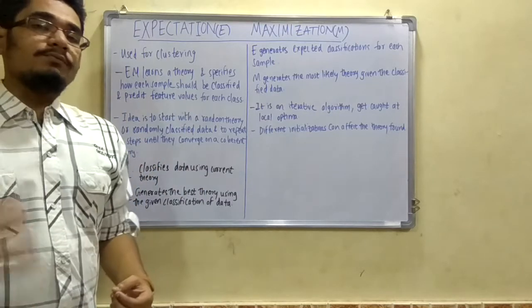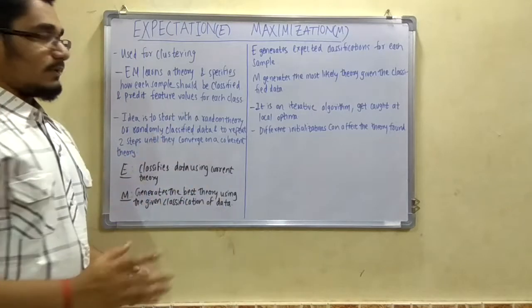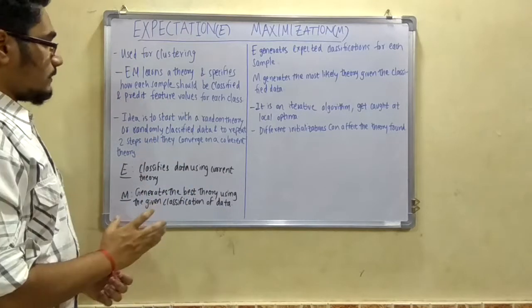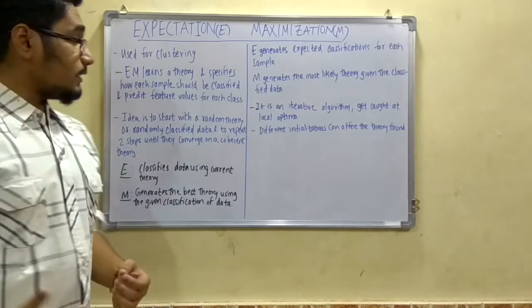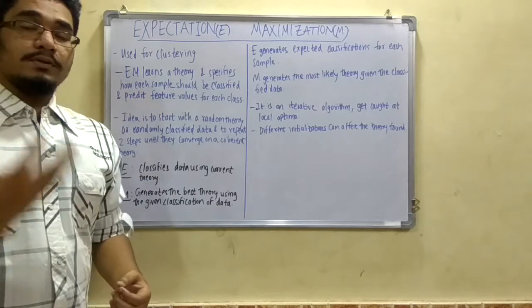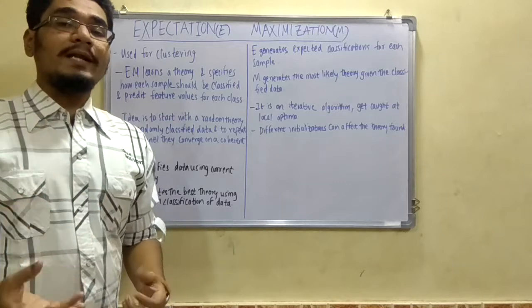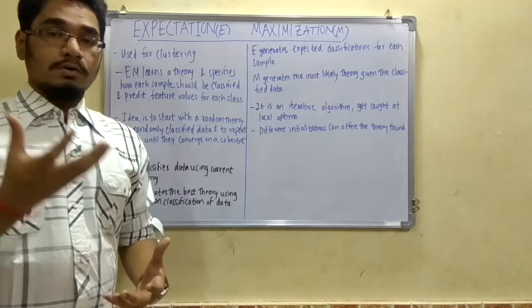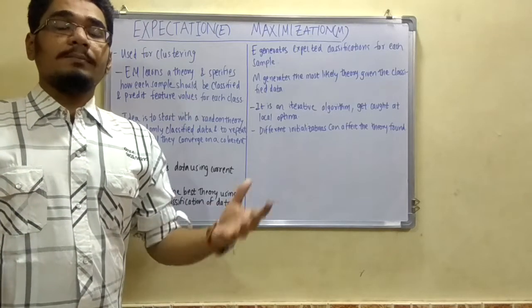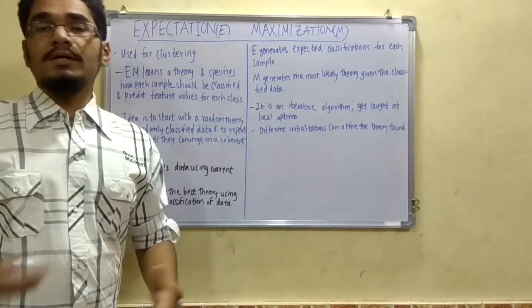It specifies how each sample from that theory should be classified into different levels and what values should be predicted accordingly for each of the classes. This gives a brief and broad idea for the robot - what to generate and what not to generate. We are expanding the memory or the expectation for the robot.